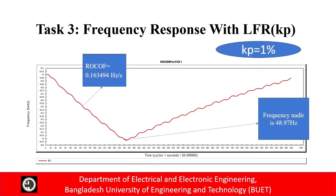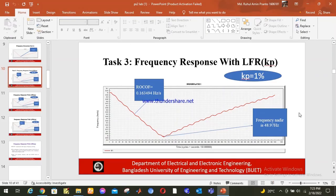Frequency response with LFR, or Load Frequency Relief, can improve the RoCoF and frequency nadir of the system. Task 3 involves frequency response with load frequency relief. There can be frequency-dependent loads on the system — typically rotating loads like motors — whose consumed power is proportional to frequency. When frequency starts to fall, their demand also decreases, which reduces the load-generation difference from the actual power imbalance caused by the contingency, leading to better frequency response. We vary the kp value to observe changes in the frequency excursion curve.